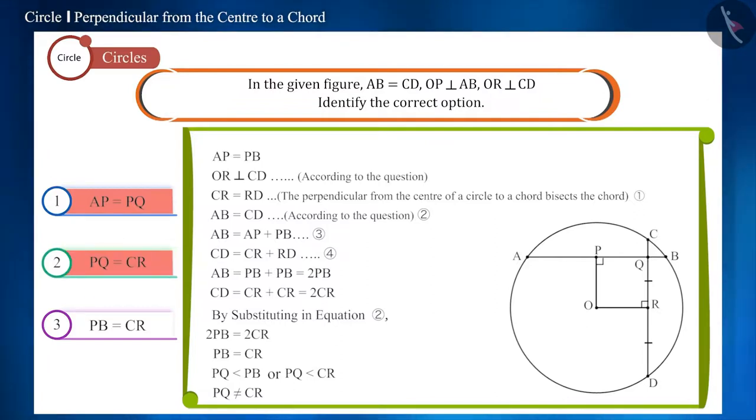Friends, pay attention here. We get that PB is equal to CR. And this is our third option. That is, our third option is correct.